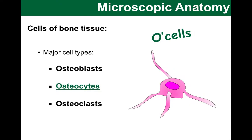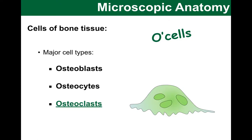You can see that osteocytes have long branches to connect with other cells, and their function is to direct bone development by sensing pressure and cracks. Finally, we have osteoclasts. They break down old bone, dissolving it. They originate from the bone marrow, similar to white blood cells. Another characteristic you can see is that they have multiple nuclei.